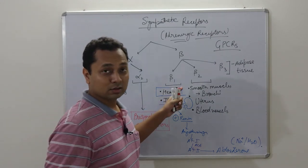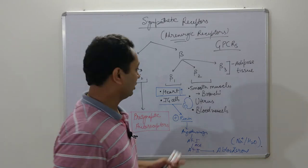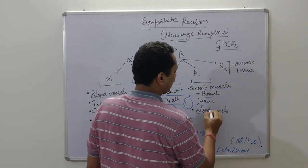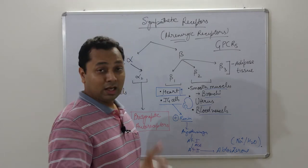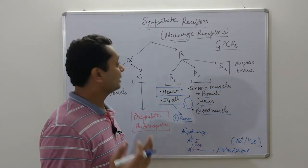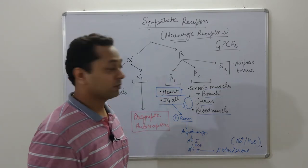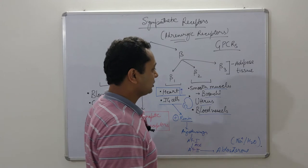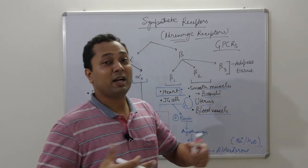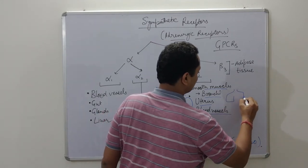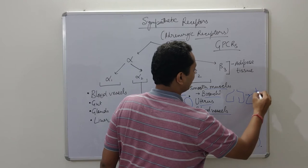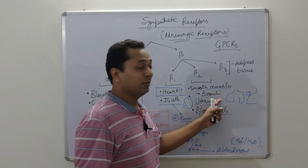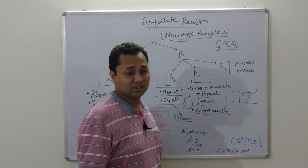Aldosterone is responsible for sodium and water reabsorption, which is how the body prevents water loss under stress. In the heart, there is increased force of contraction, rate of contraction, and conduction velocity. Now, regarding smooth muscles — such as bronchi, uterus, and blood vessels — beta-2 receptors mediate relaxation. For the lungs to expand better, the bronchi need to dilate, providing more airway for airflow, resulting in bronchodilation.